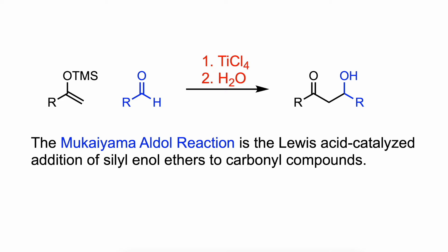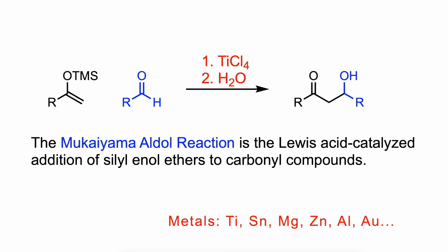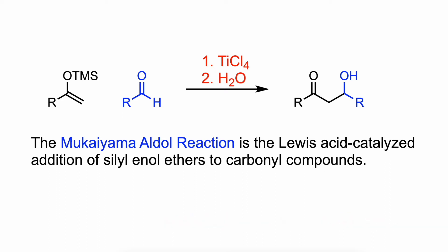Some Lewis acids include metals such as titanium, tin, magnesium, zinc, aluminum, or even gold. The most used carbonyl reactants are aldehydes and ketones, and the most common silyl enol ethers are those derived from them.